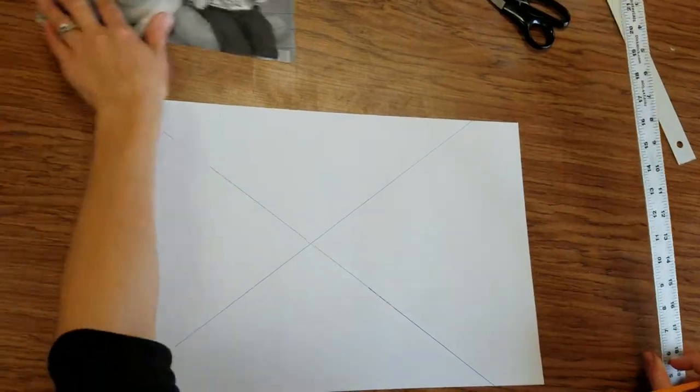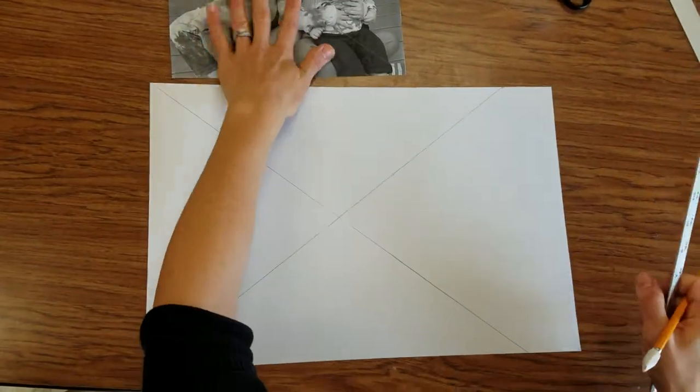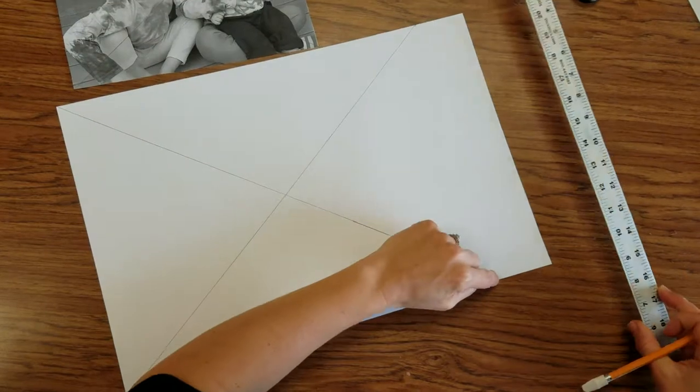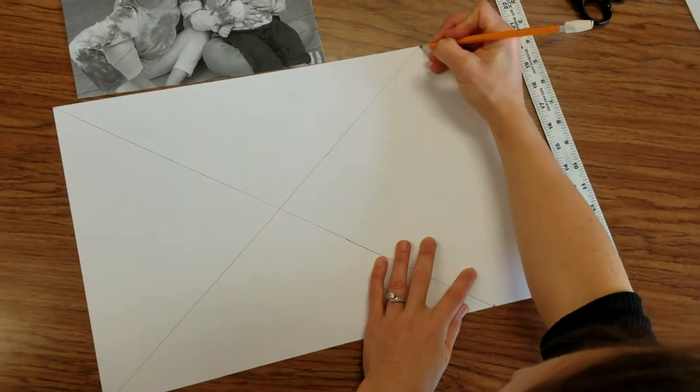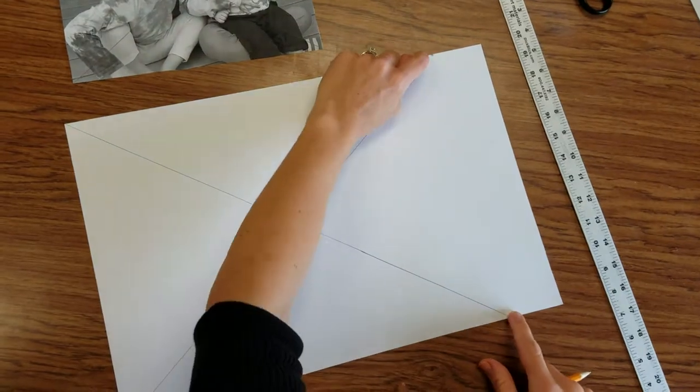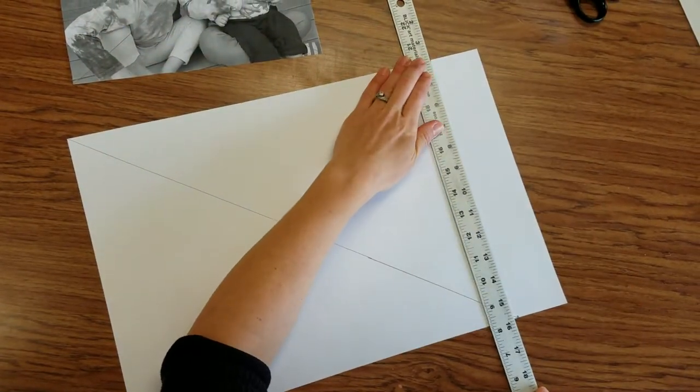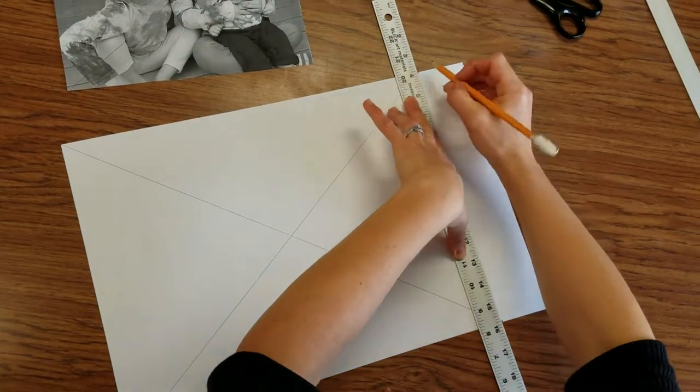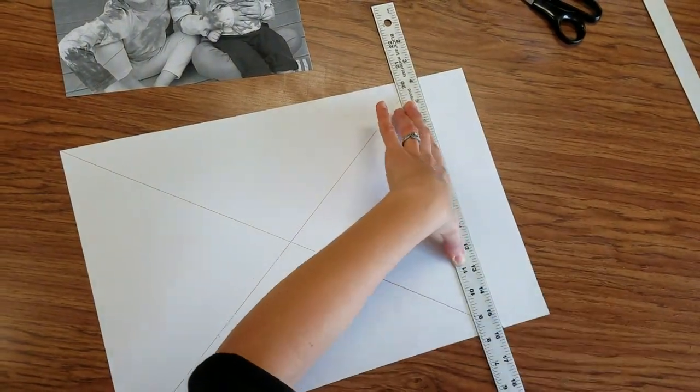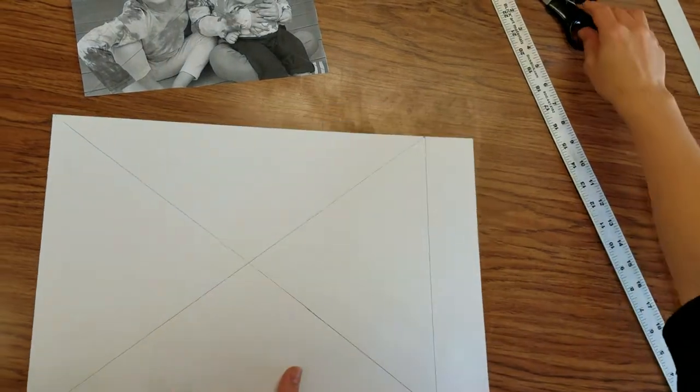Now this drawing paper is longer in proportion than my photograph is. So these two lines right here tell me where to cut off that extra paper. Wherever they go off the page is going to become my new place to line up dot to dot. And this is all going to be extra paper.